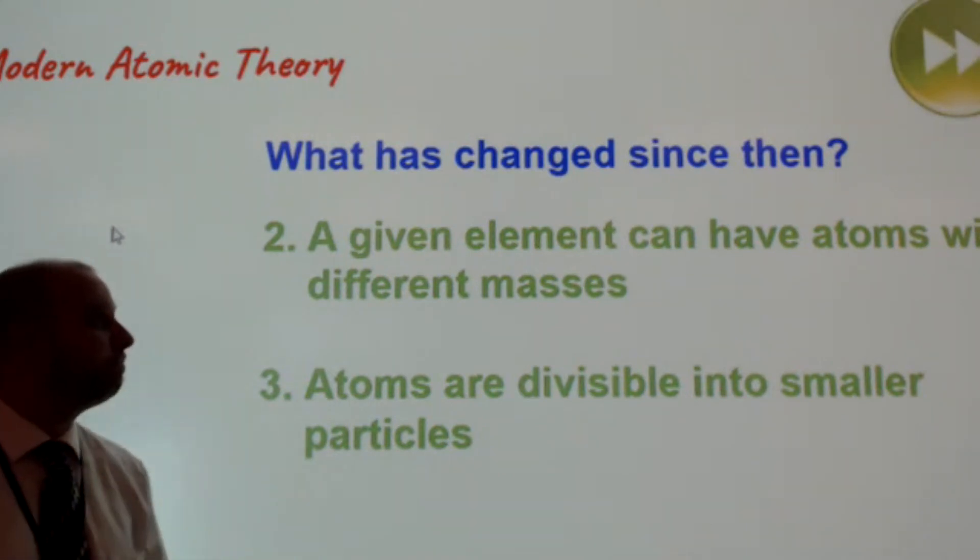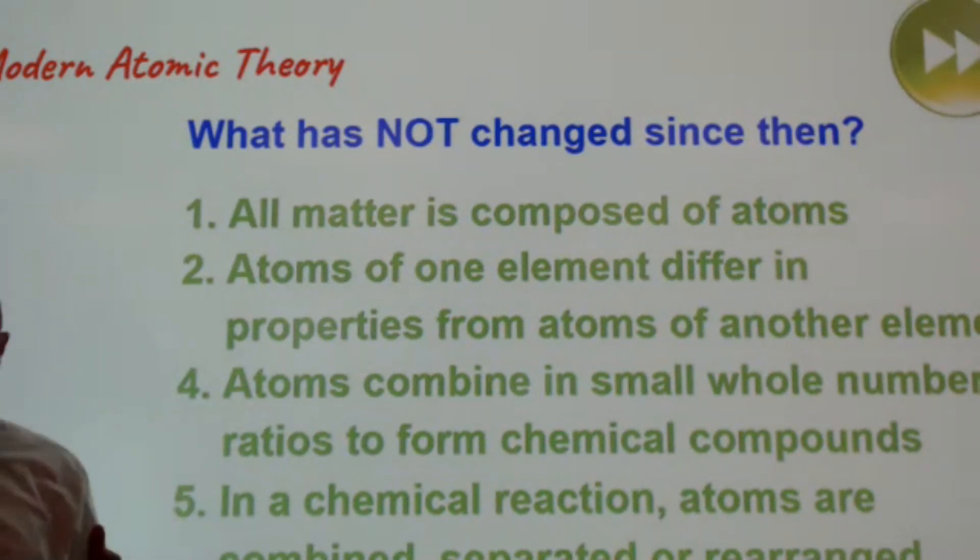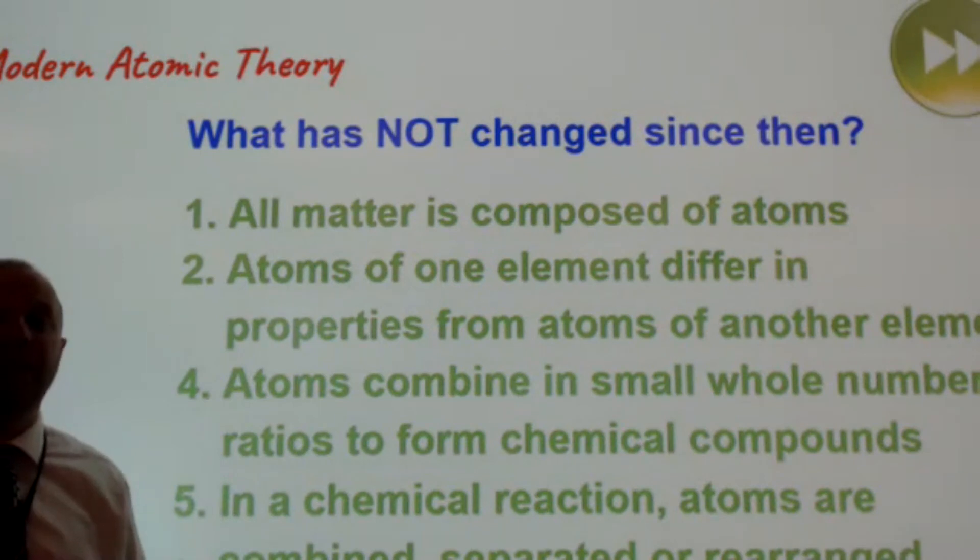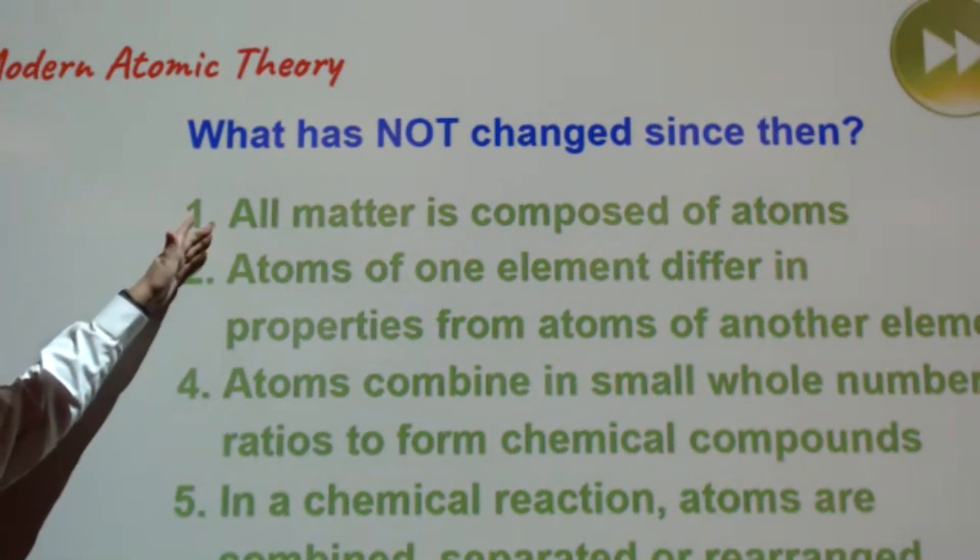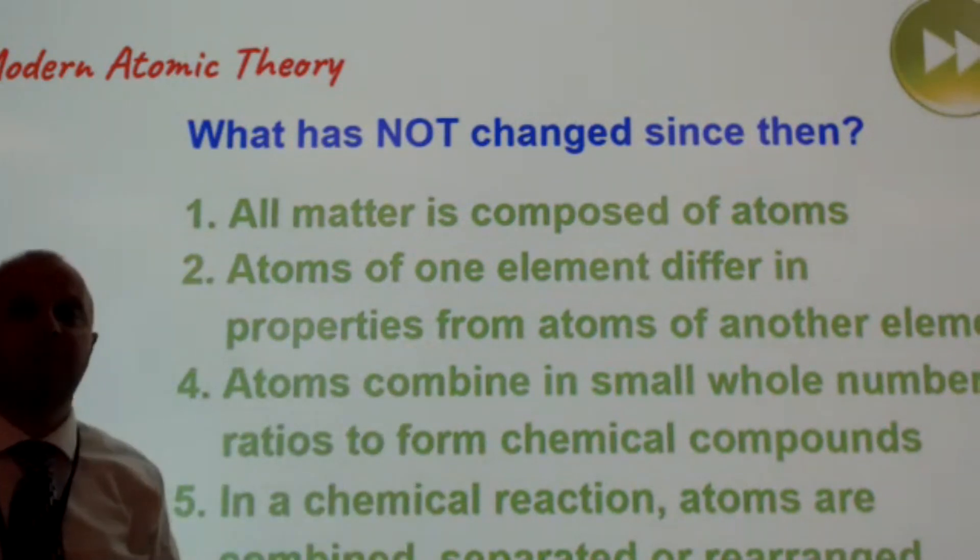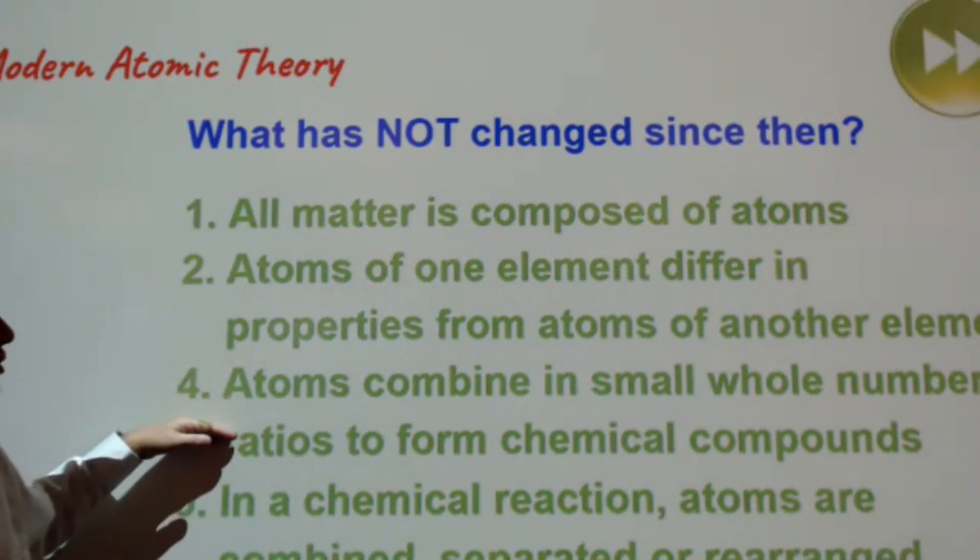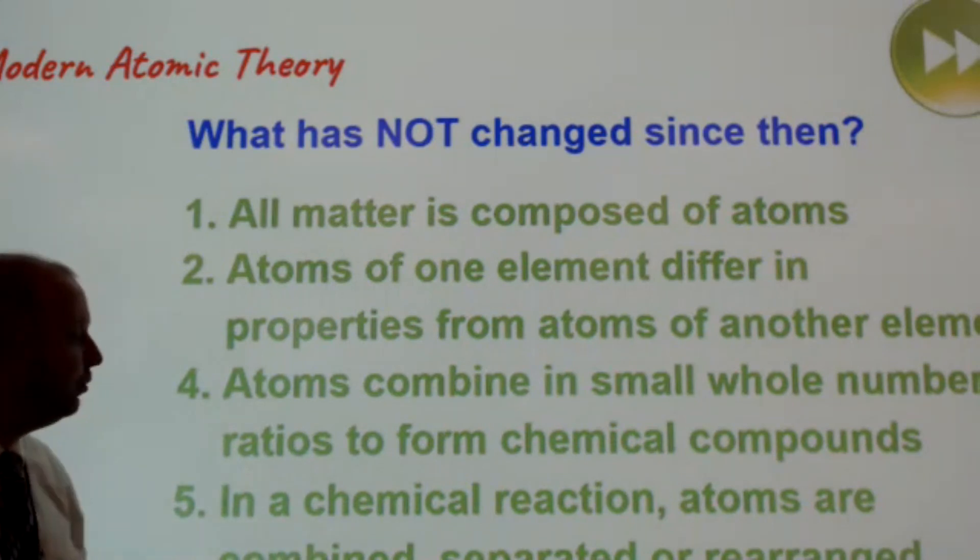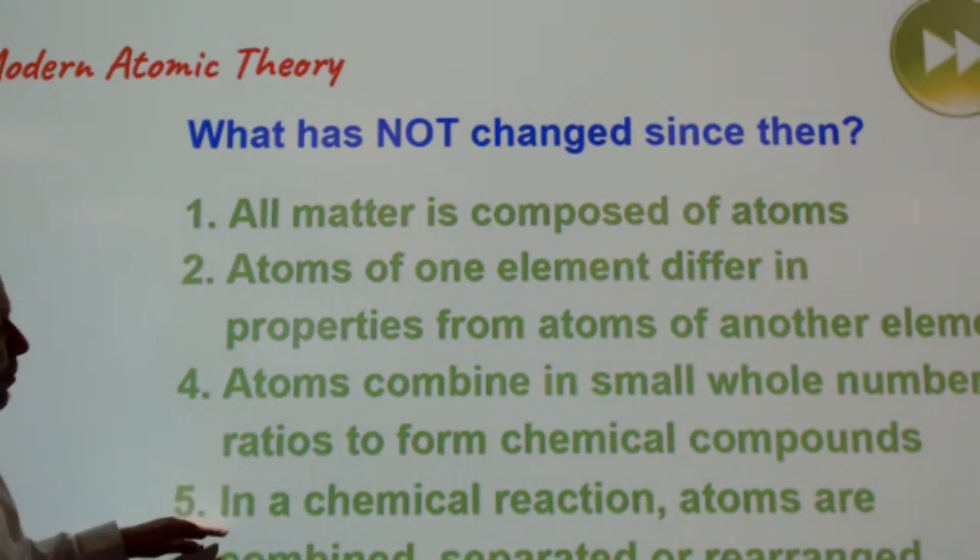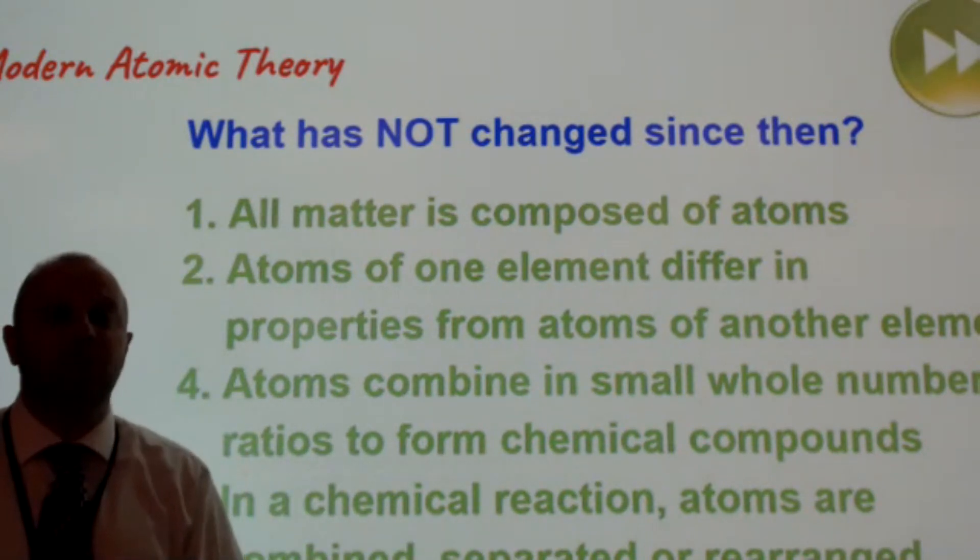What I find really remarkable is all of the things that have not changed. So someone back in 1810 thought up these five ideas and really, to some extent, four out of the five still remain true. So if we look, all matter is composed of atoms. That is still true today. Atoms of one element differ in properties from atoms of another element. That is still true today. Atoms combine in small whole number ratios to form chemical compounds. Again, still true today. And finally, in a chemical reaction, atoms are combined, separated, or rearranged. And we now know that's also true today. Pretty remarkable.